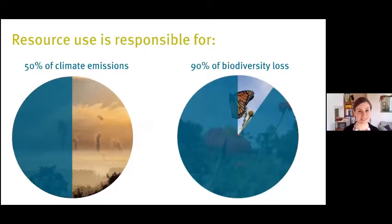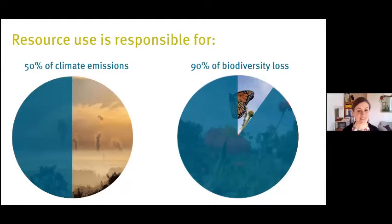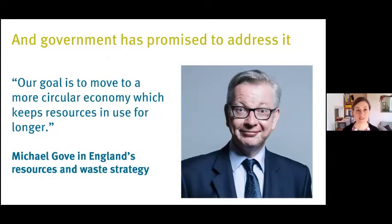The key statistic — which really bears repeating — is that resource use, meaning extraction and processing, drives 50% of climate emissions and 90% of biodiversity loss, as well as water stress around the world. It's such a shocking and compelling statistic. What it says to me is that if you can crack the issue of resource use and bring it in line with what planetary boundaries allow, you can go a long way towards meeting our climate targets as well as preventing nature's decline.